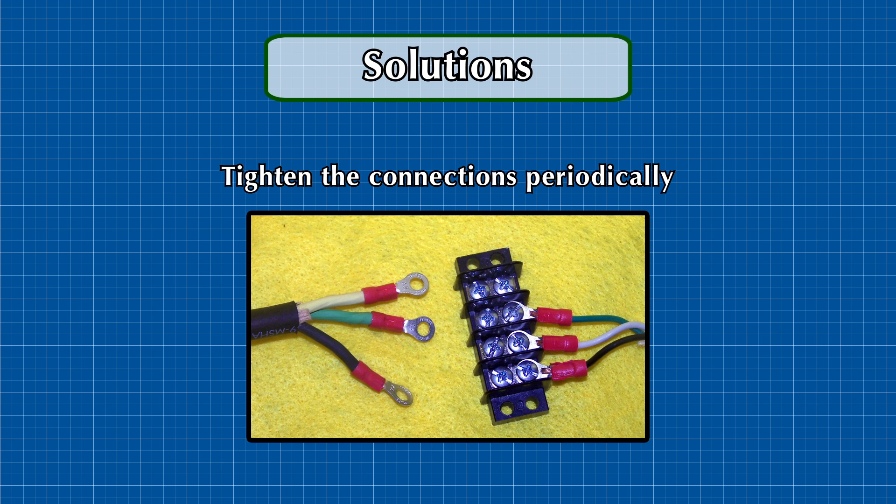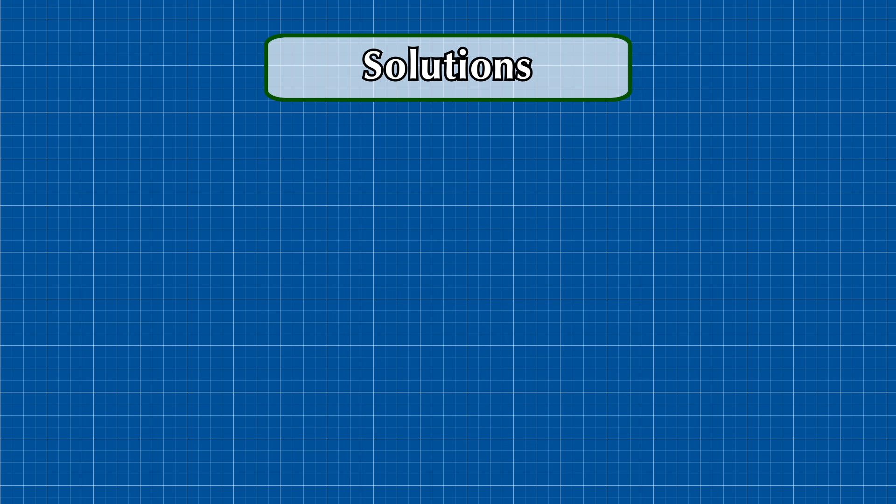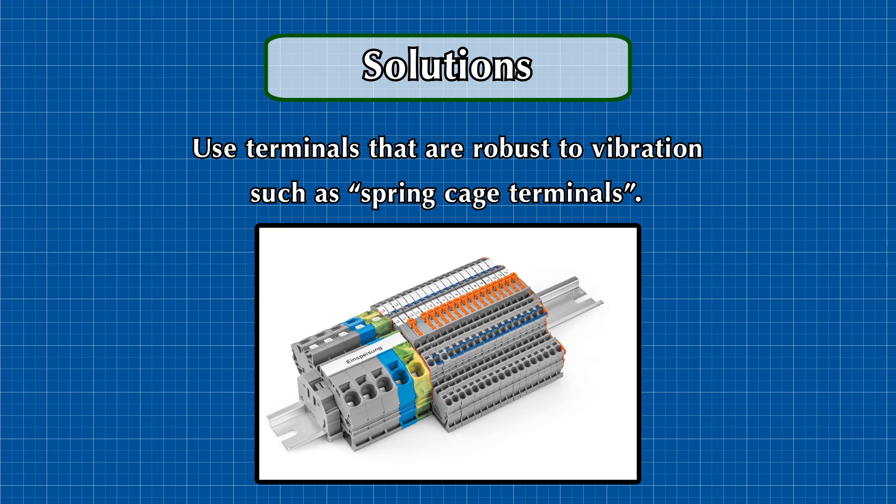The obvious solution is to tighten the connections during periodic maintenance. Also, use types of connection terminals that are more robust to vibration, which is the cause of the connections becoming loose over time. One example of such terminals is spring cage terminals.